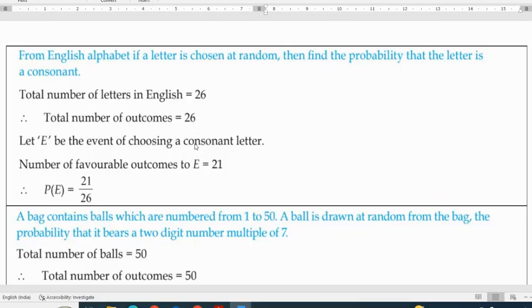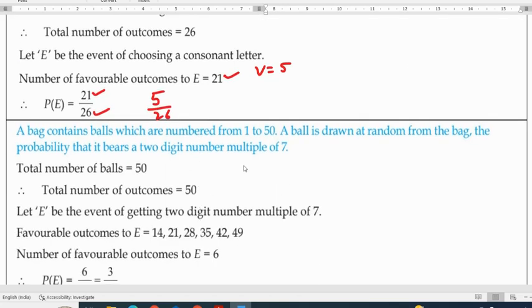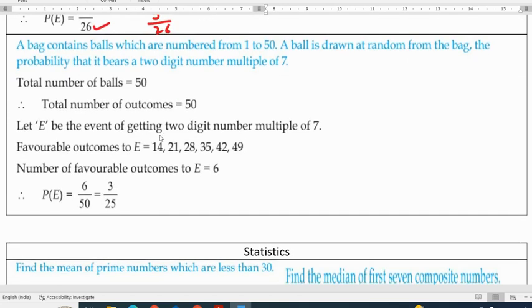Alphabets: consonants or vowels. Total possible outcomes are 26, consonants are 21, probability is 21 by 26. Probability of getting a vowel is 5 by 26. Balls containing 1 to 50, two digit numbers multiples of 7: we have 6 two digit numbers multiples of 7, so probability is 6 by 50 which is 3 by 25.